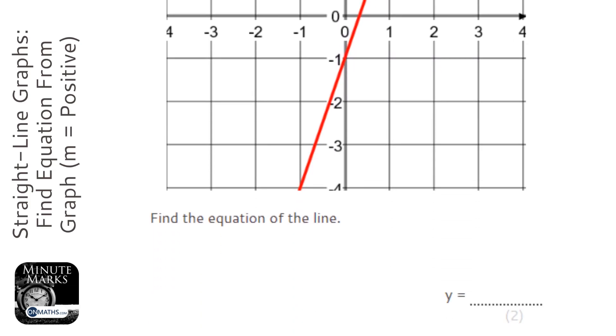Okay, so we're asked to find the equation of the line. The first thing to write down is y equals mx plus c. Here m is the gradient and c is the y-intercept.